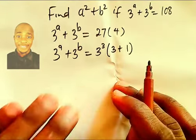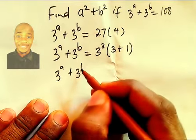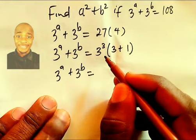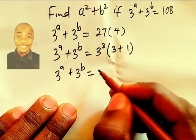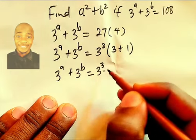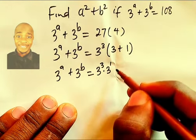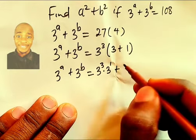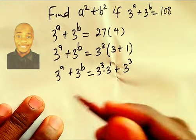The next thing I'm going to have is 3^a + 3^b equals to... let's try to distribute this over this. It's going to be 3³ · 3¹ plus 3³ · 1. Anything multiplied by 1, we have that same.